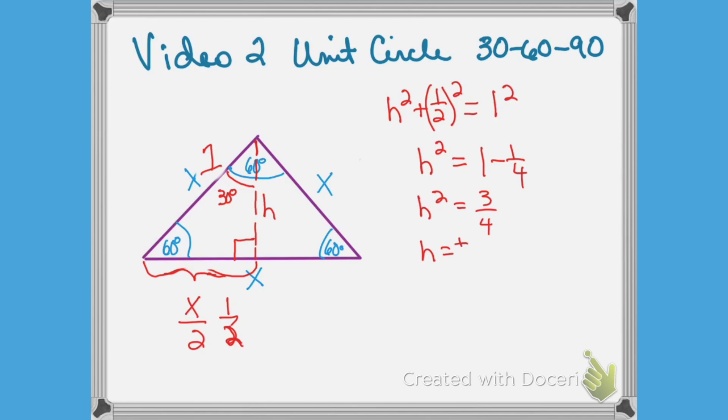And h is equal to plus or minus the square root of 3 fourths. And we know that we're not going to look at the negative because this is a length, but I am going to break up the radical. And that will give me the square root of 3 over 2.